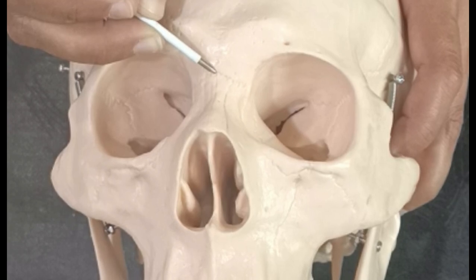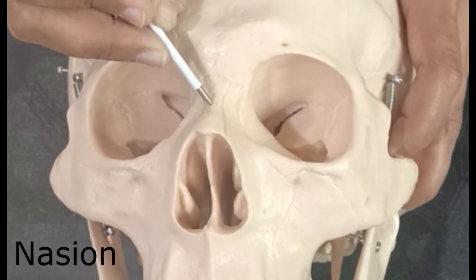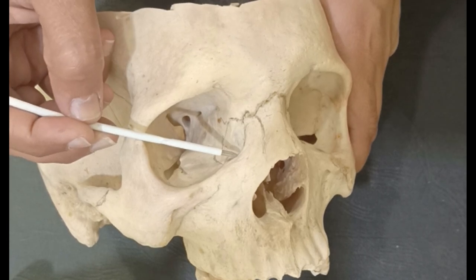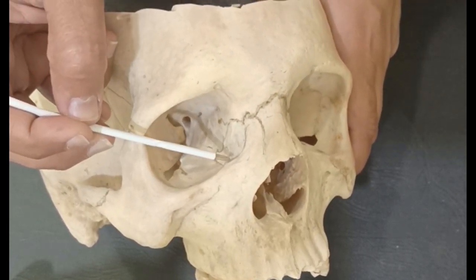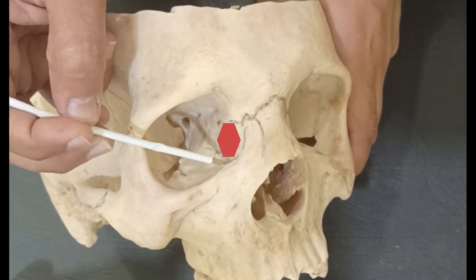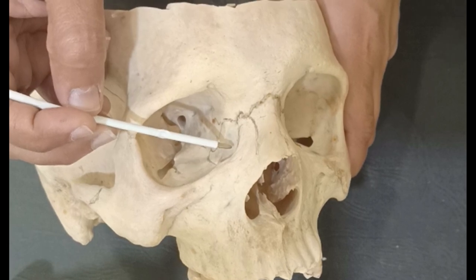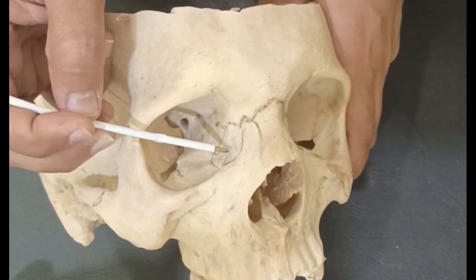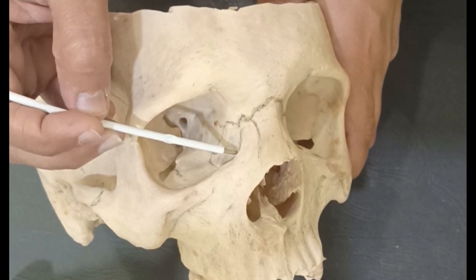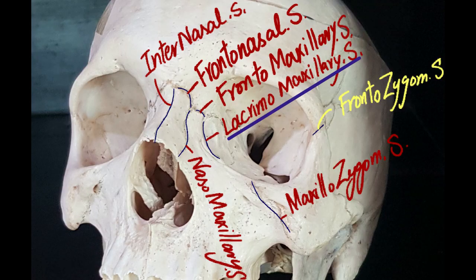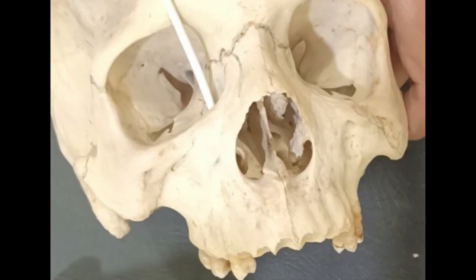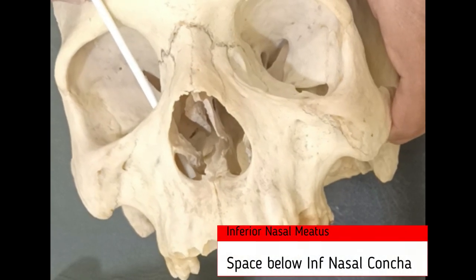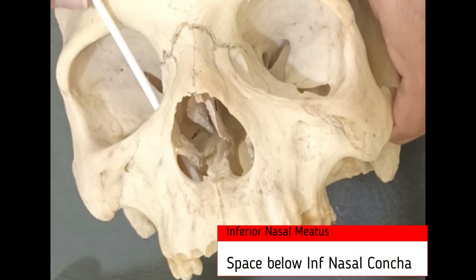Nasion is the point where the frontonasal suture meets the internasal suture. This is called the nasion. Now, the lacrimal bone is a very important bone which forms the medial part of the orbit. This lacrimal bone forms a suture with the maxilla bone, and that suture is called the lacrimomaxillary suture. The nasolacrimal duct starts from the medial part of the orbit and opens into the inferior meatus of the nose, and this is the opening for the nasolacrimal duct.